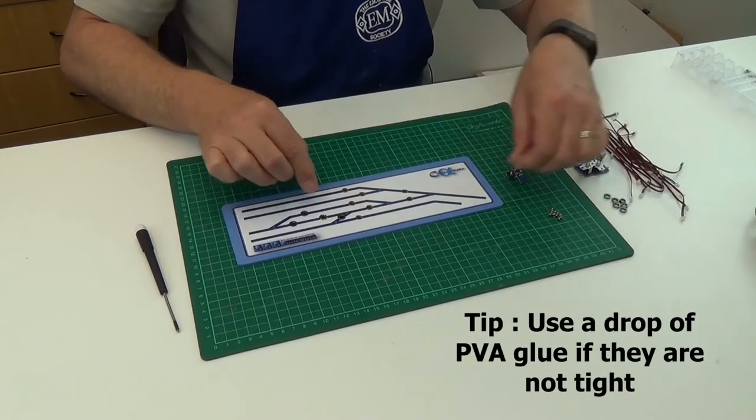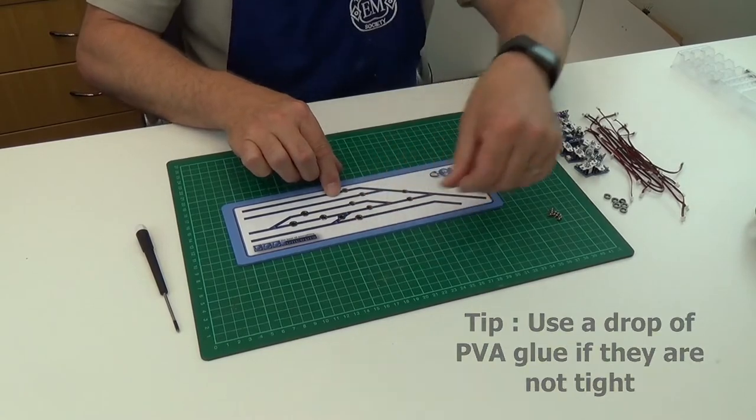The bezels should just clip into the holes. If the holes have been made slightly too big, a drop of PVA glue should hold them.